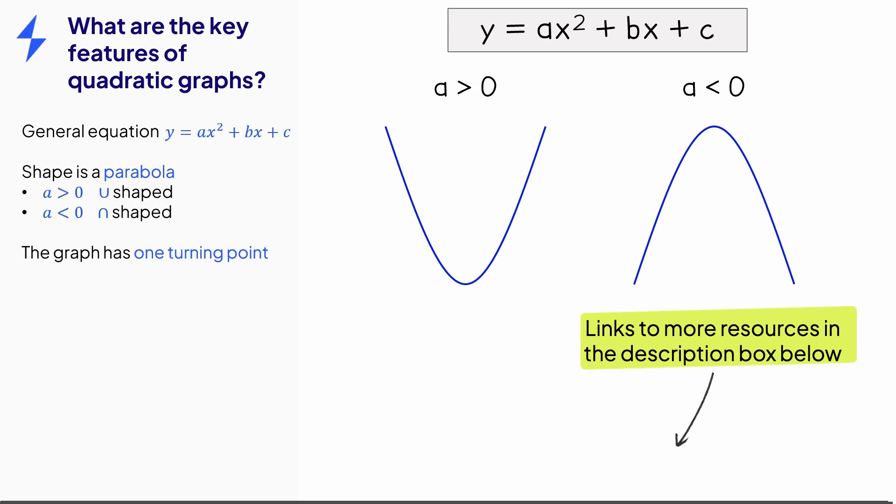Quadratic graphs will always have exactly one turning point. If a is positive, then this will be a minimum point, and if a is negative, then this will be a maximum point.